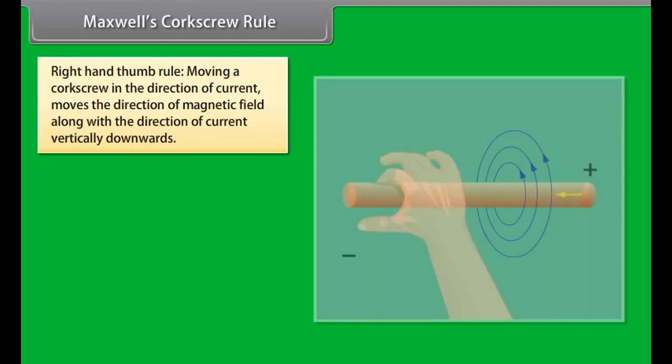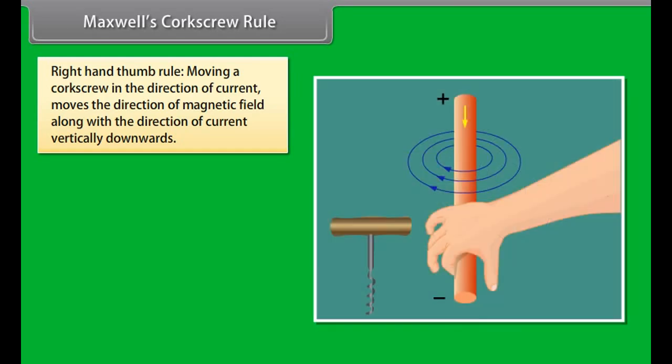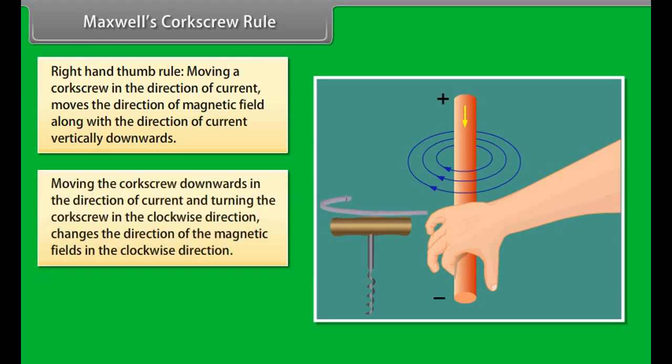Maxwell's Corkscrew Rule. Maxwell's Corkscrew Rule, also known as Right Hand Thumb Rule, defines that moving a corkscrew in the direction of current moves the direction of magnetic field along with the direction of current vertically downwards. If we move the corkscrew downwards in the direction of current and the handle of corkscrew is turned in the clockwise direction,